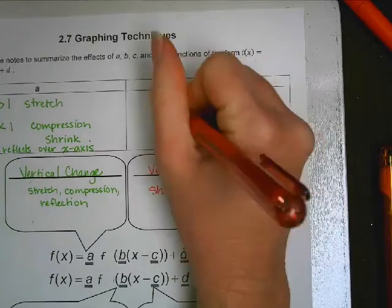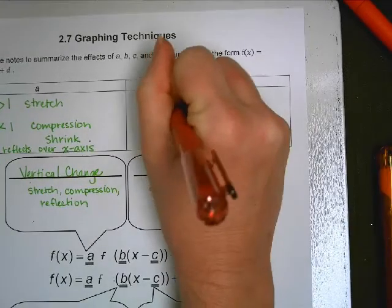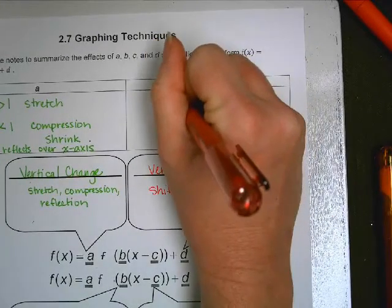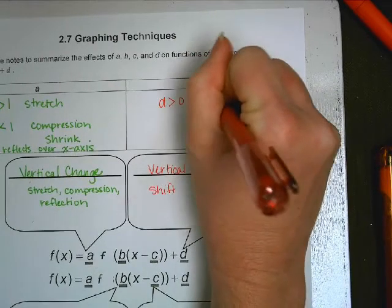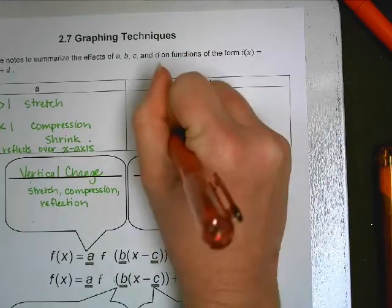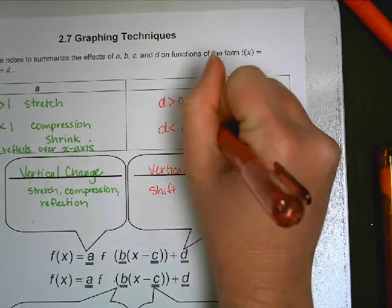It's a shift. If D is greater than zero, it shifts up. If D is less than zero, it shifts down.